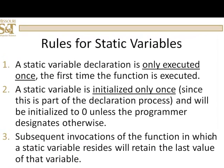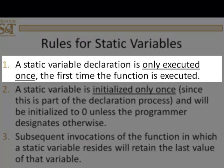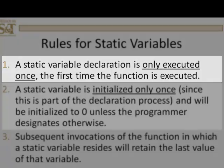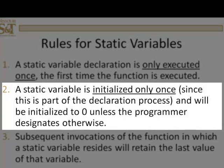So, the rules for static variables. Number one, the declaration and initialization of a static variable is executed once and only once, and that happens upon the first execution of the function. The initialization will happen only once, and that will be the first time that it is executed. And unless you otherwise specify, the value will be initialized to zero.